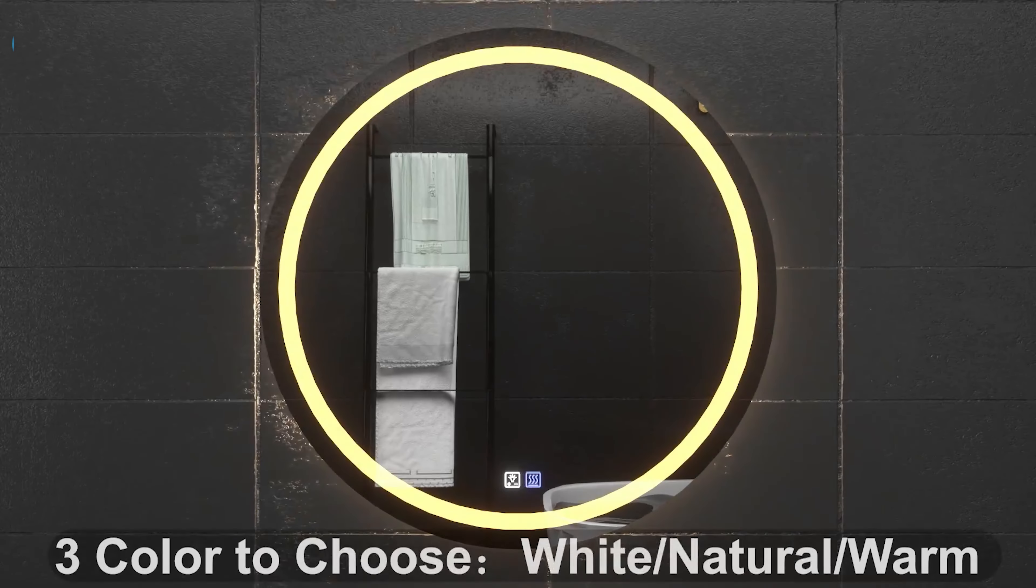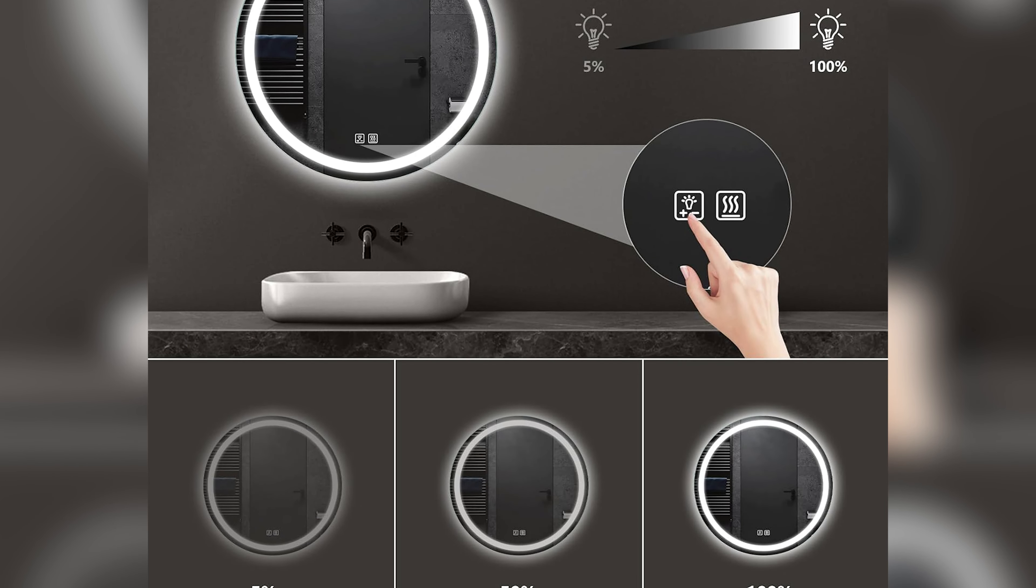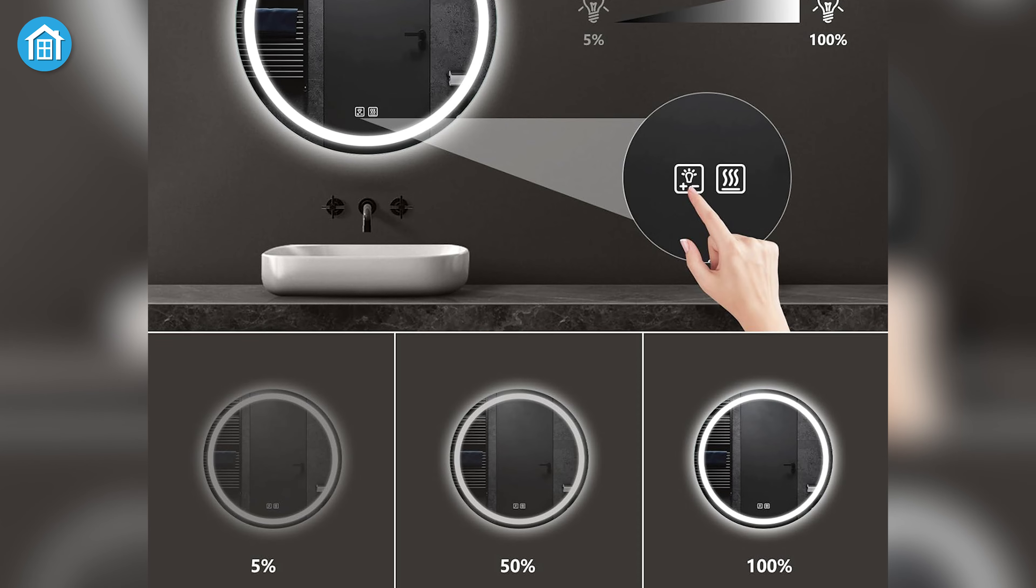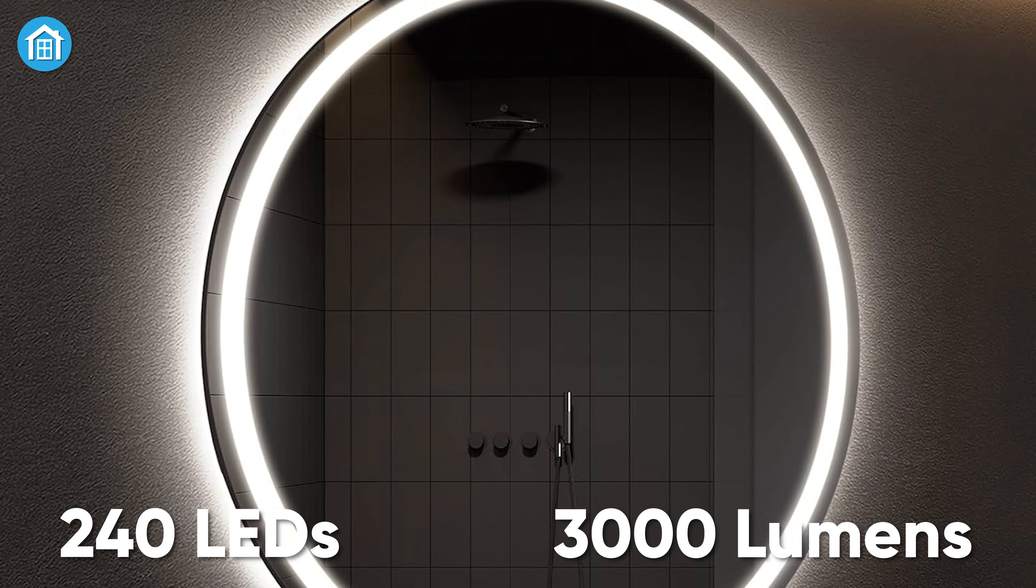With a simple tap, toggle between three color temperatures: warm, natural, and white, to suit your mood and needs. Adjust the brightness from a subtle 5% to a radiant 100% with a long press, powered by 240 LEDs that reach up to 3,000 lumens.